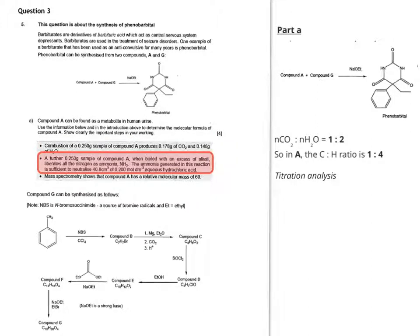The next piece of information is telling us what happens if a further 0.250 gram sample of compound A is boiled with an excess of alkali and liberates all the nitrogen as ammonia, NH3. Just that sentence also tells us that A must contain nitrogen. Then it says the ammonia generated in this reaction is sufficient to neutralize 40.8 centimeters cubed of 0.200 moles per decimeter to the minus 3 aqueous hydrochloric acid.